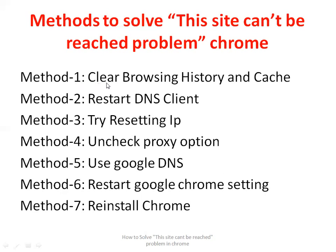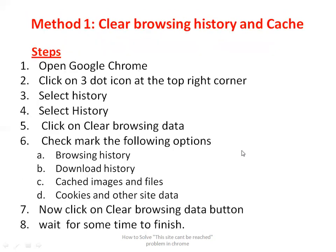Now I will discuss the first method: clear browsing history and cache. First, open the Google Chrome browser. At the top right corner you will find a three-dot icon — click on that. Then select the History option, and after clicking History you will again get the History option — click on that. Then click on Clear Browsing Data. Checkmark the following options: browsing history, download history, cached images and files, and cookies and other site data. After that, click the Clear Browsing Data button.